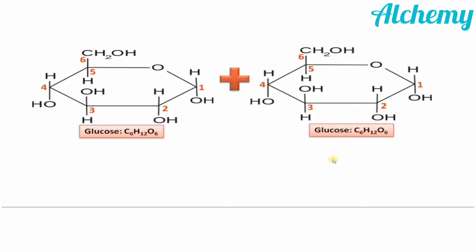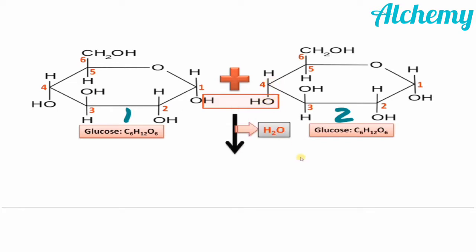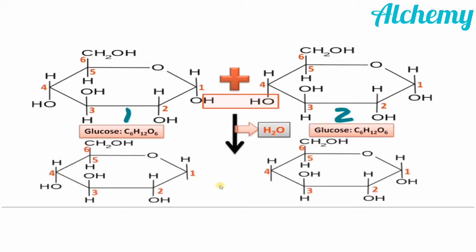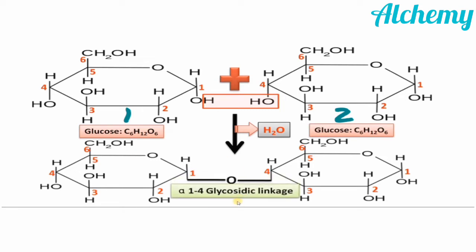Maltose is formed by the combination of two glucose monosaccharide units. A bond is formed between the first carbon of the first monosaccharide and the fourth carbon of the second monosaccharide. H from the first carbon of the first monosaccharide combines with OH of the fourth carbon of the second monosaccharide, resulting in the formation of a water molecule which gets eliminated. The two glucose units are thus joined by a glycosidic linkage.